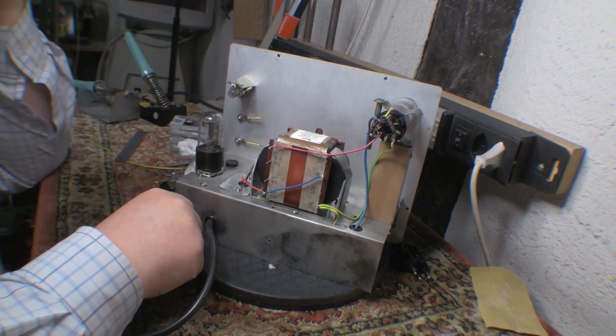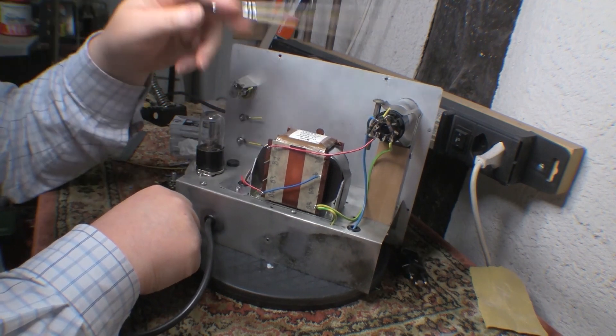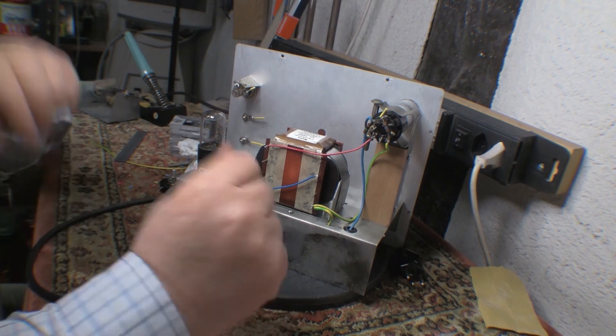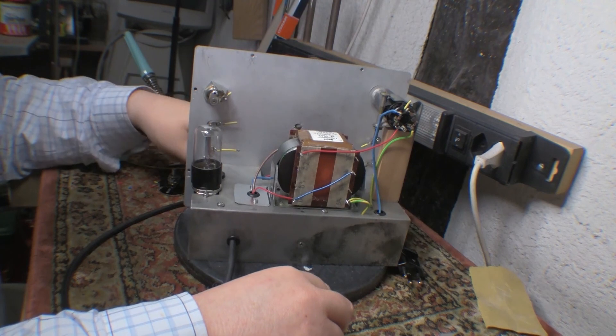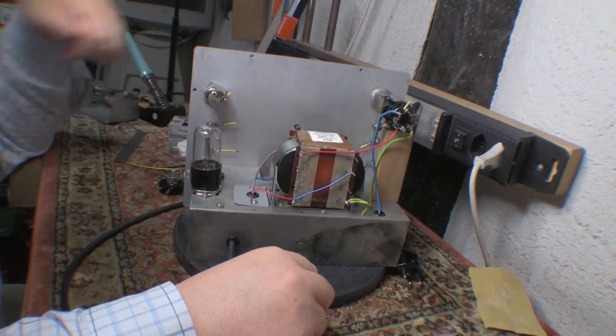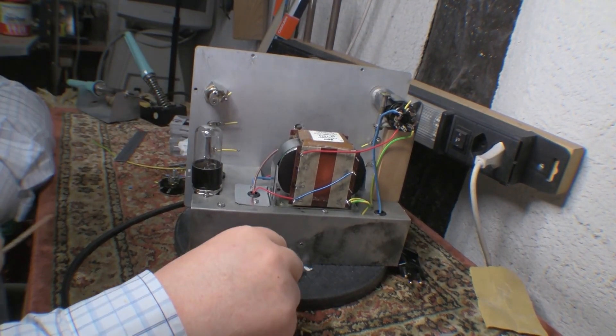I'll put in the replacement magic eye and we're all good to go. But first things first, gotta get that verified 500 volt supply works and varies nicely from the control on the front. And then we'll go from there.